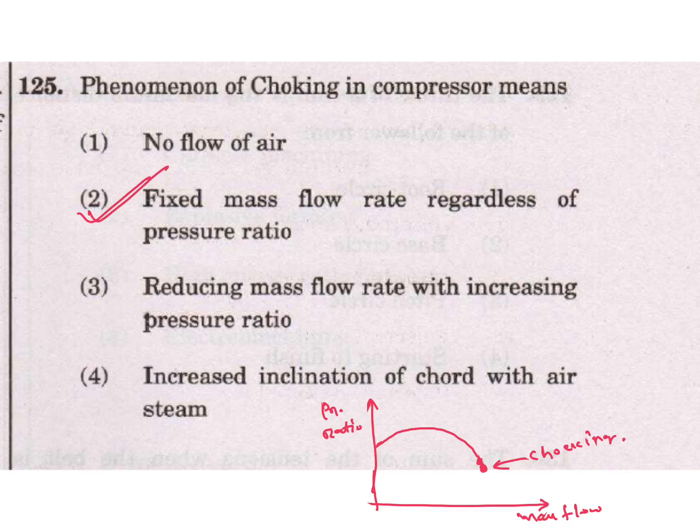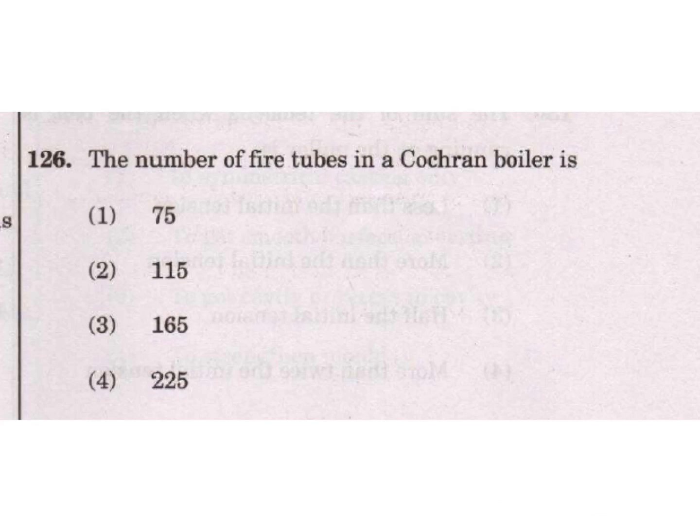The number of fire tubes in a Cochrane boiler is 165.